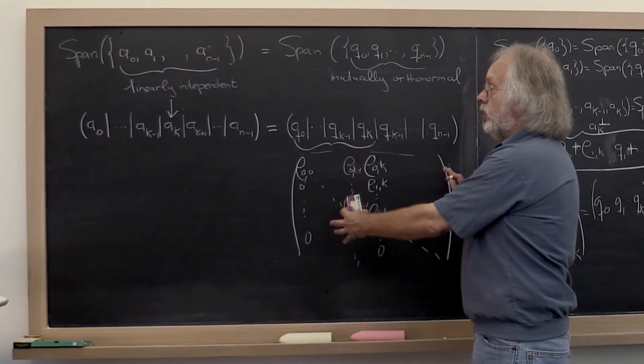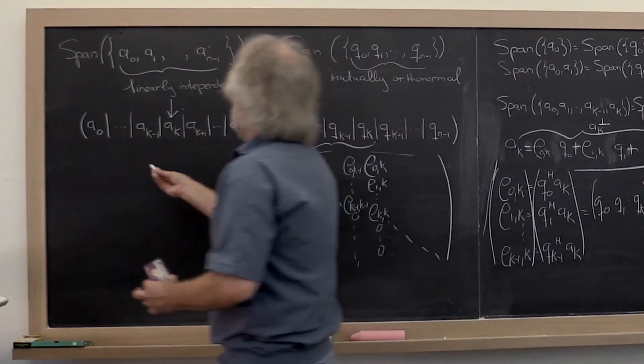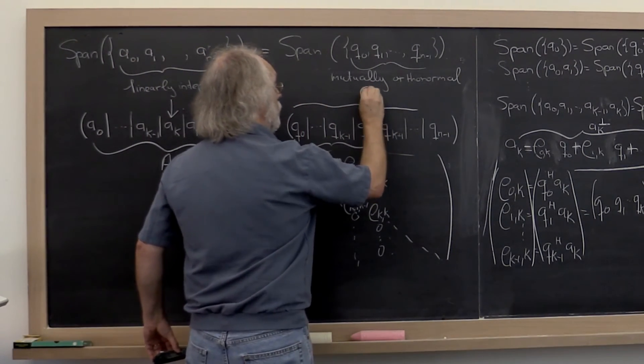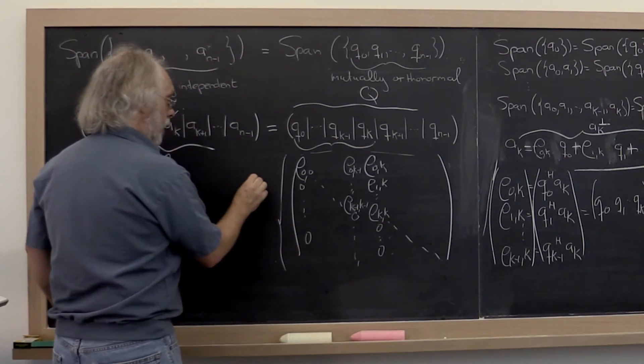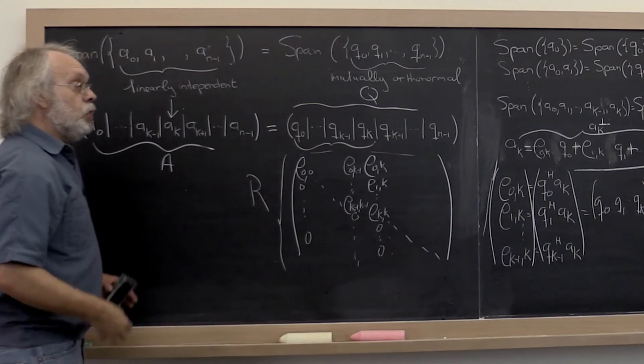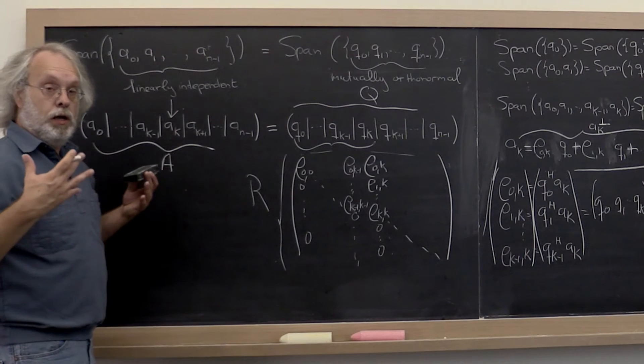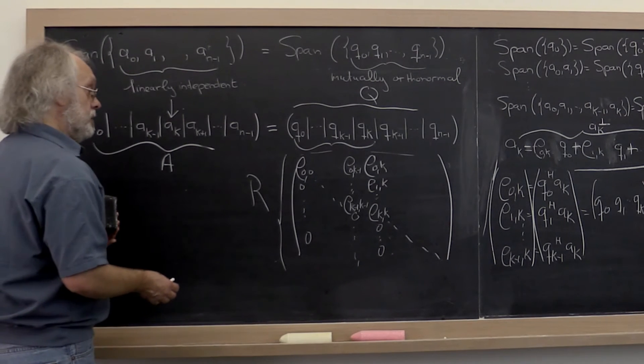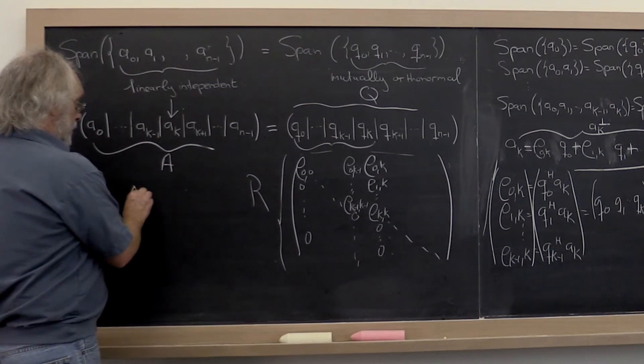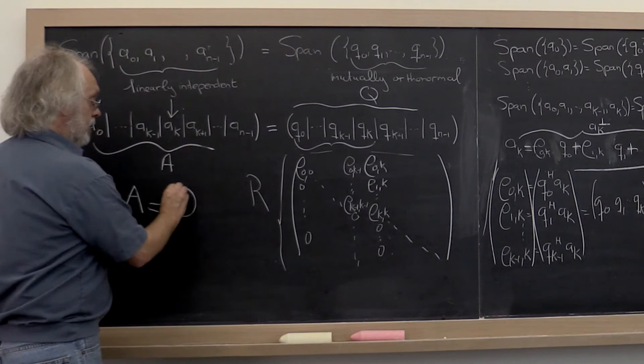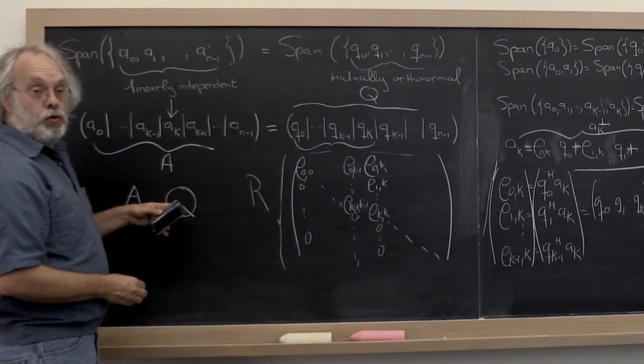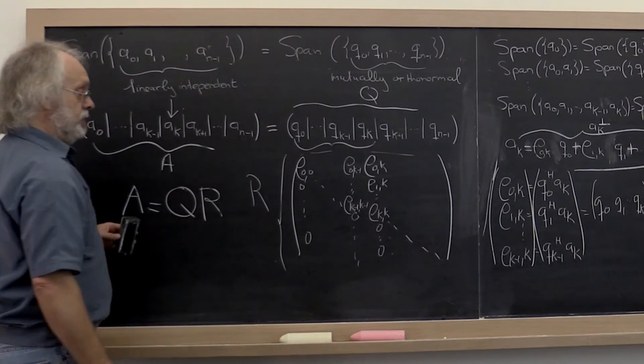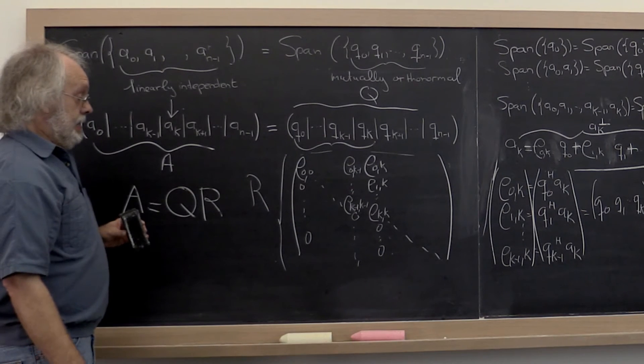And from that we conclude that if we call this matrix A, this matrix Q, and this matrix R, then what we really are doing when we execute the Gram-Schmidt orthogonalization process is express A as the product of a matrix with orthonormal columns Q times an upper triangular matrix R. And that's it.